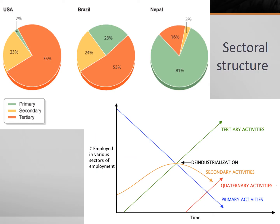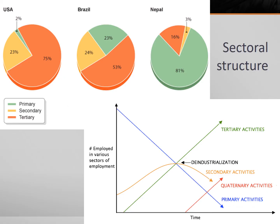We're discussing this now because the structure of a country's economy can reveal much about its level of development. In less developed countries — countries that are part of the periphery, like Nepal — the primary sector is dominant and many people work in agriculture, specifically subsistence farming. As countries industrialize, secondary sector employment increases, so semi-periphery countries see increasing employment in manufacturing.